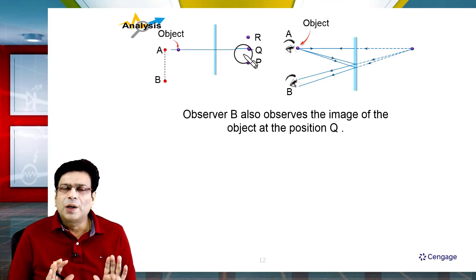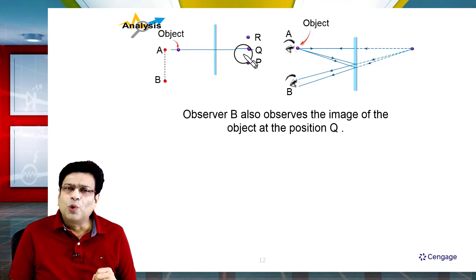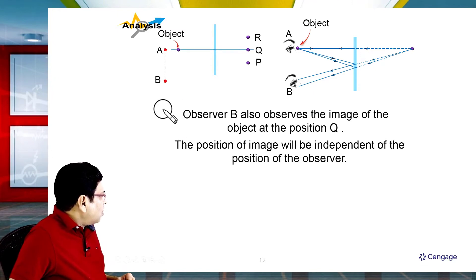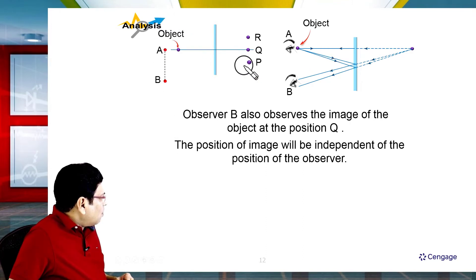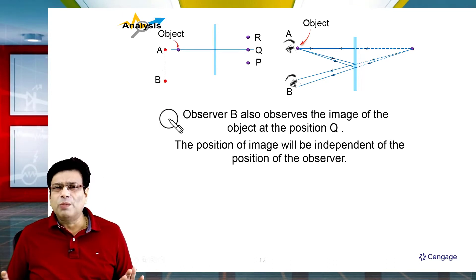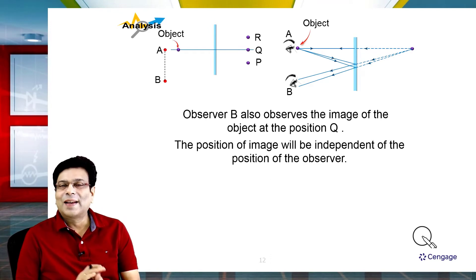Observer B also observes the image of the object at position Q. The important observation here is: the position of the image is independent of the observer. Whether observer A, B, or C is positioned in front of the mirror, the image position remains the same.